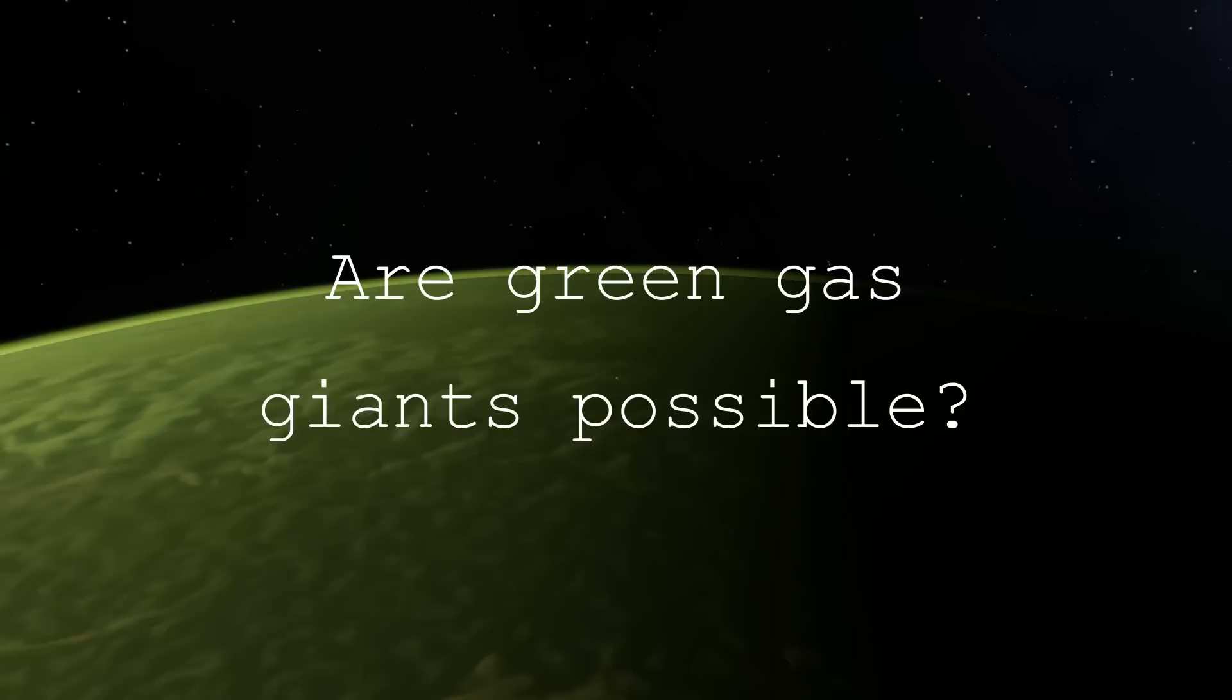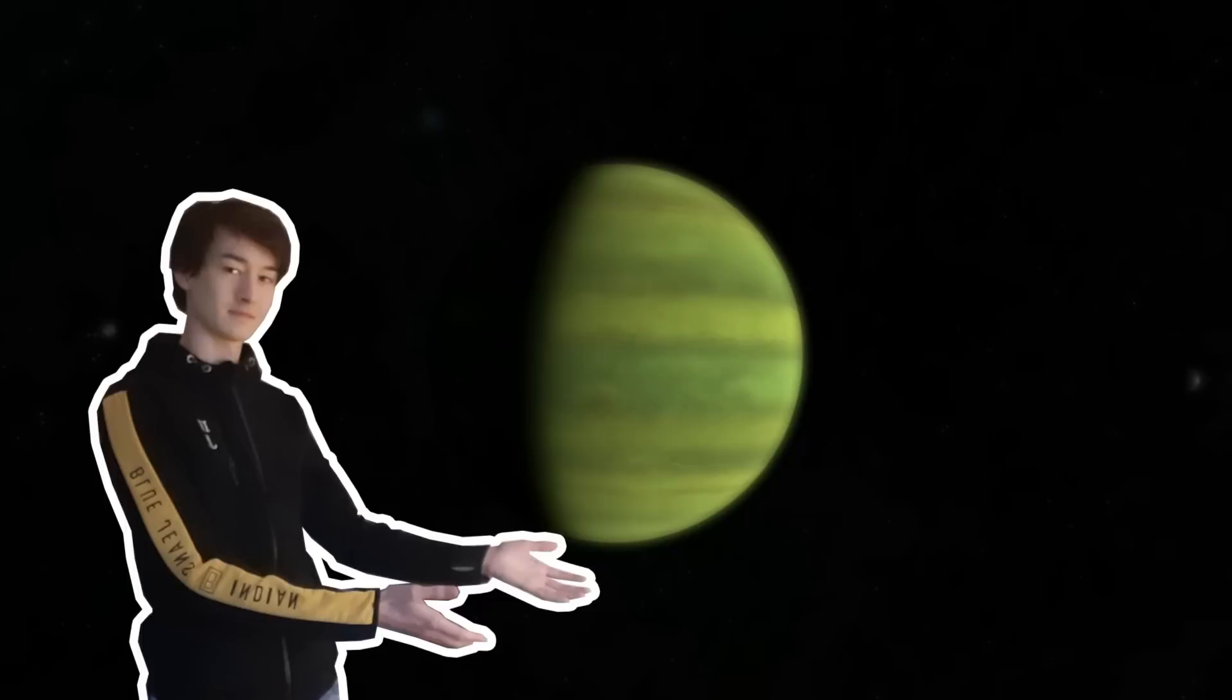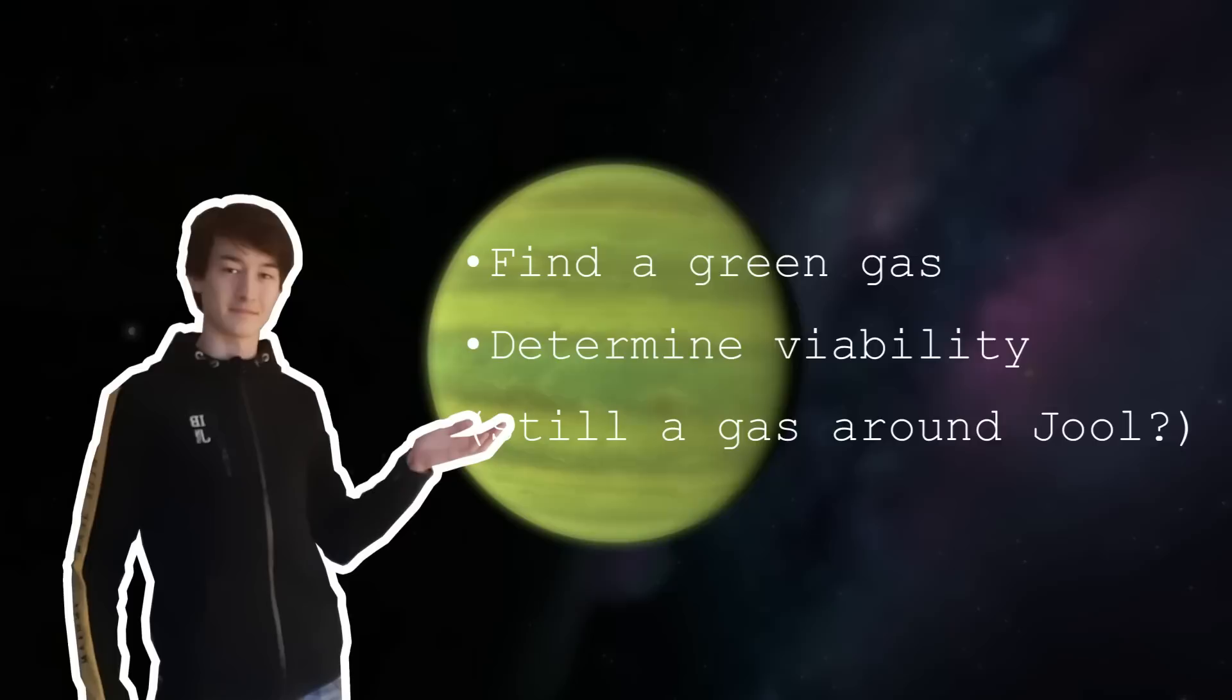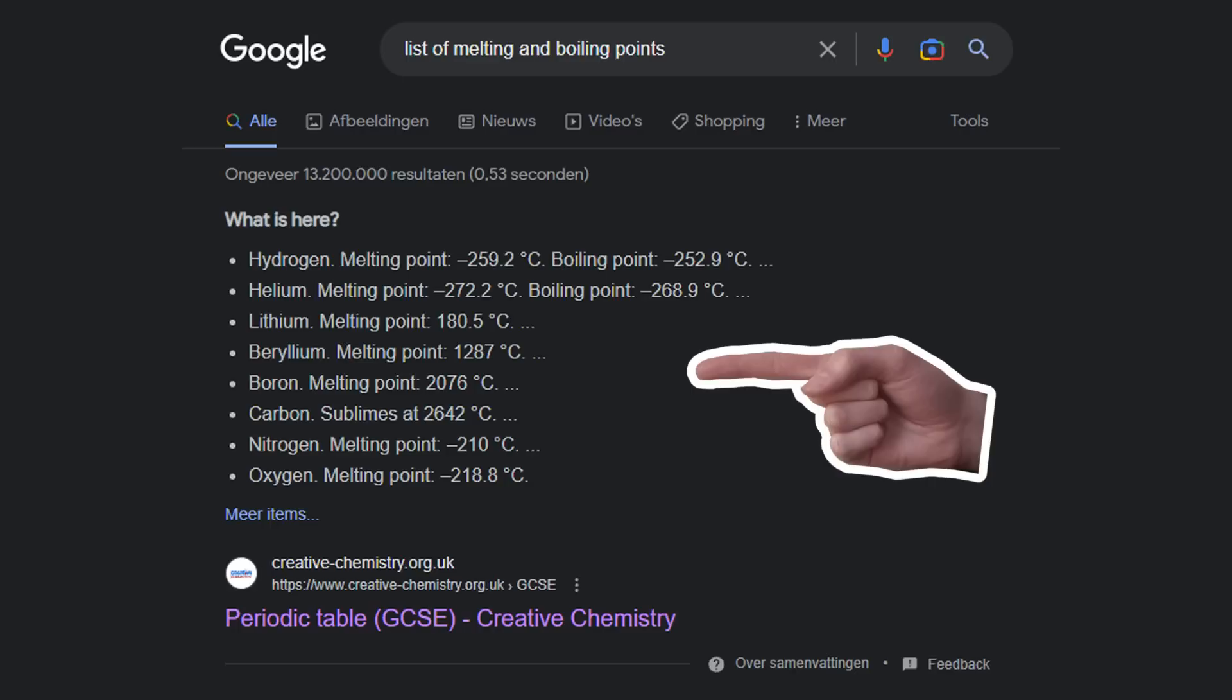Our plan to figure this out will be this: find a possible candidate substance that is green and check whether it is actually in a gaseous state when around Joule. We do this because each type of gas has its own properties. Not all substances have the same melting and boiling point.